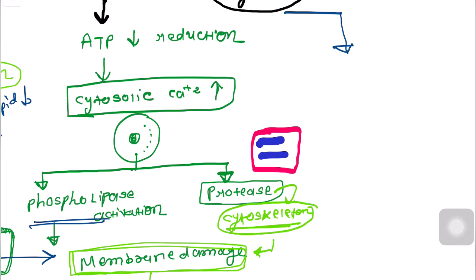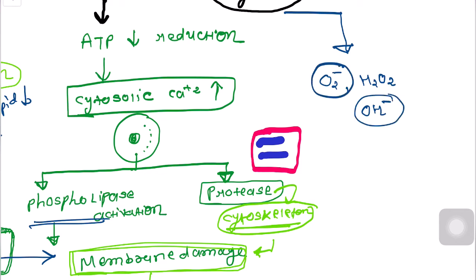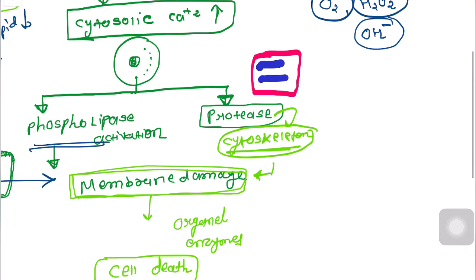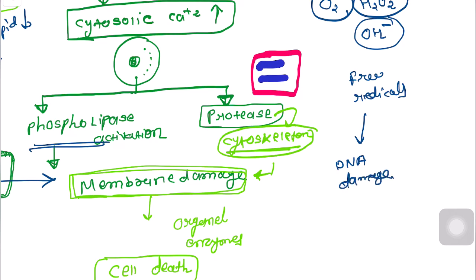When ATP is not produced, free radicals become activated inside the cell. The main free radicals include reactive oxygen species, hydrogen peroxide, and hydroxyl ions. These free radicals damage our DNA — causing cellular DNA damage — as well as performing lipid peroxidation, which further leads to membrane damage.